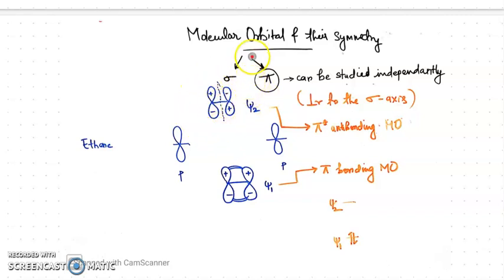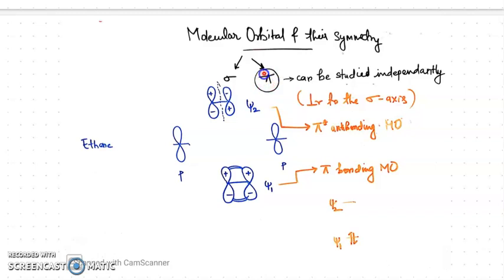Hello everyone. Let us continue our discussion on the pericyclic reaction. We are trying to understand the conservation of orbital symmetry theory. In order to understand that fully, we have to first understand the molecular orbitals and their symmetry. As discussed in the previous video, we can have two different types of molecular orbitals, usually sigma and the pi bonds. In pericyclic reactions, since we are dealing with more of the pi bond electron rearrangement, we will be concentrating on the pi bond. We are going to try to understand the pi molecular orbitals for the various conjugated molecules.